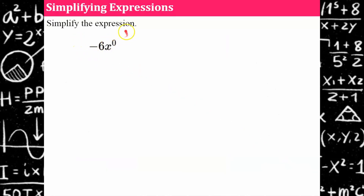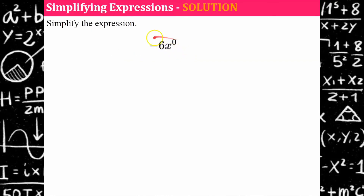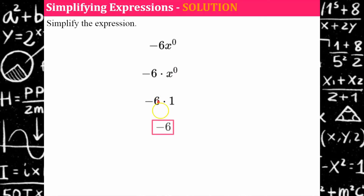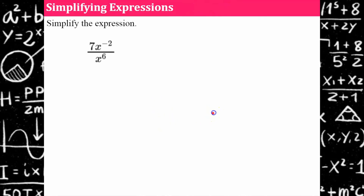Now we'll look at algebraic expressions. This expression is really negative six multiplied by x to the zero. x to the zero is one, and negative six multiplied by one is negative six.